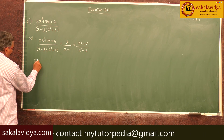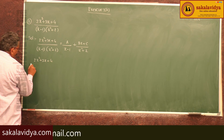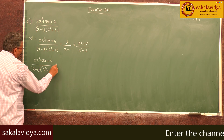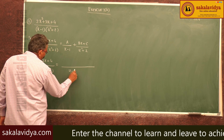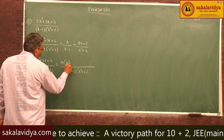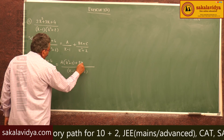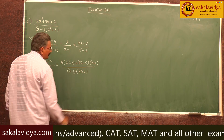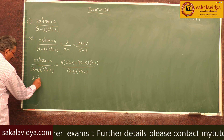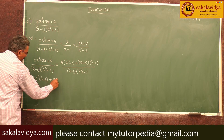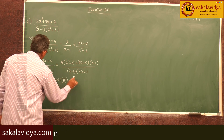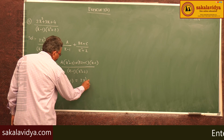So (2x² + 3x + 4) / [(x - 1)(x² + 2)] equals [A(x² + 2) + (Bx + C)(x - 1)] / [(x - 1)(x² + 2)]. The denominators cancel, giving A(x² + 2) + (Bx + C)(x - 1) = 2x² + 3x + 4.